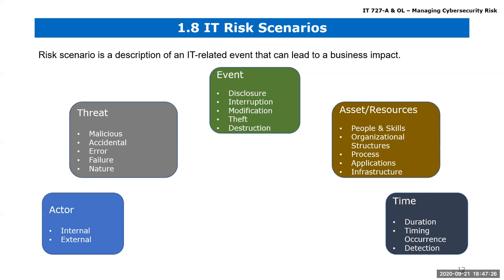Time is quite important, especially around that estimation. Using the California example — there's a projection that California will be underwater in around 40 years — but it doesn't stop big tech companies from going there, because the time they see the threat occurring is insignificant at this point. When we get to 90 years from now, it might be a big deal.